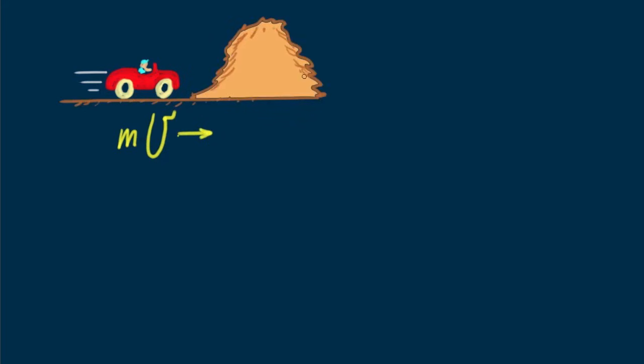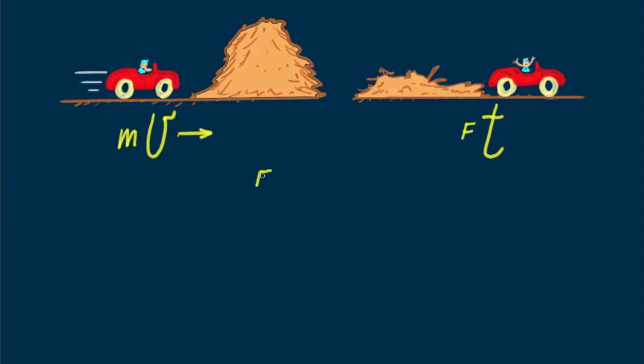We can apply this relationship to the unfortunate situation of being in a car that goes out of control and is brought to a halt by a collision. In any case, the impulse of the collision will bring your momentum to zero. Suppose the collision is with a haystack. Then the impulse, force times time, is mostly in time, which is a good thing. Note the long time means a small force for a given impulse.